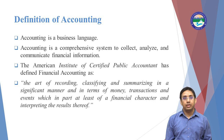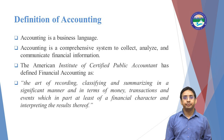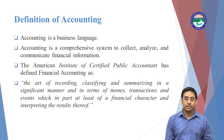Recording happens only when a transaction has taken place in an organization. We then classify those transactions into different forms. In accounting, we classify transactions by capital nature and revenue nature, and then we summarize that data so that we can get meaningful information from it. Accounting records only monetary transactions — we cannot record other than monetary transactions. For example, we record the purchasing of machinery, but we cannot record the sentiments of a person in accounting.